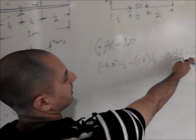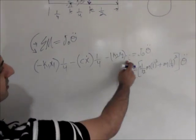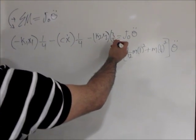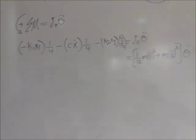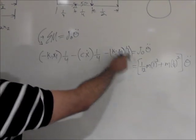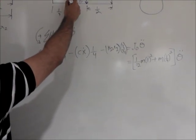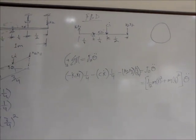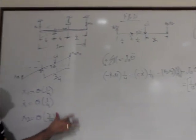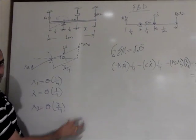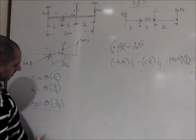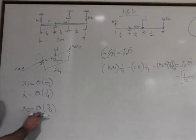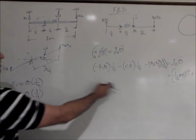Correction: the distance for k2 should be three-fourths, not one-half, since we are taking the moment referenced to pin O. Also, this term should not be squared. Apologies for that — let's keep everything in terms of theta going forward.